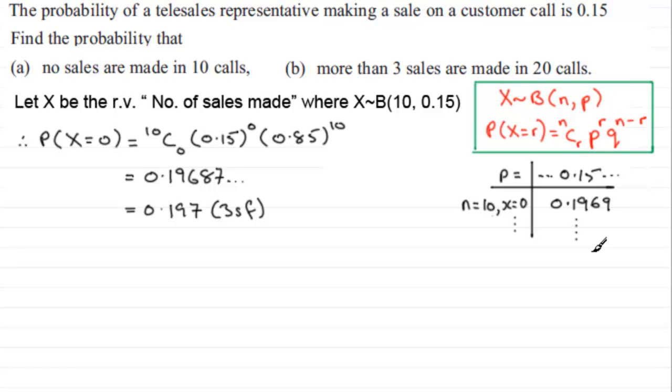You'll find that if you look under p equaling 0.15, and then n equaling 10, if you look along the top row where X equals 0, you'll see under 0.15, 0.1969.